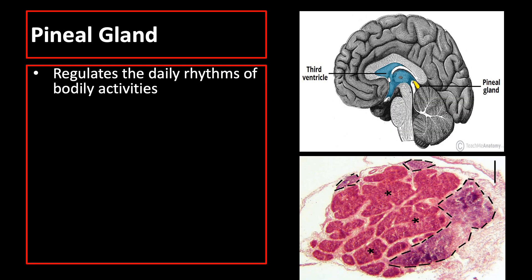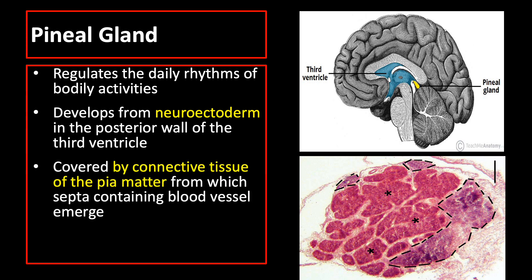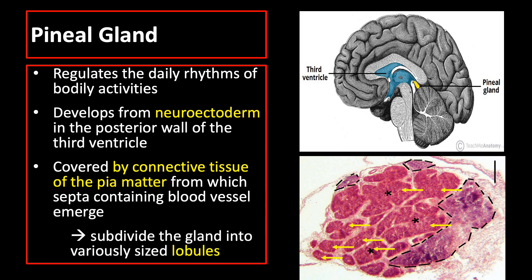The pineal gland regulates the daily rhythms of bodily activities and it develops from neuroectoderm in the posterior wall of the third ventricle. It is covered by connective tissue septa of the pia mater, from which septa containing blood vessels emerge, which subdivide the pineal gland into variously sized lobules.